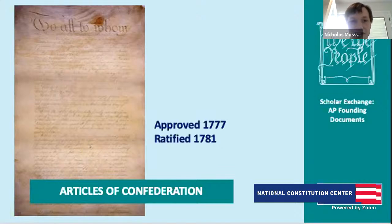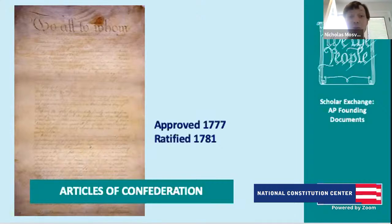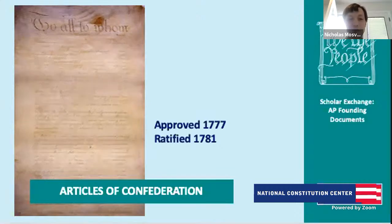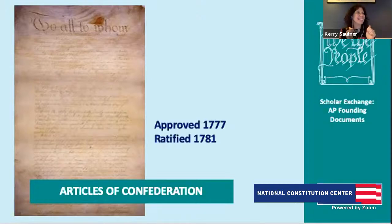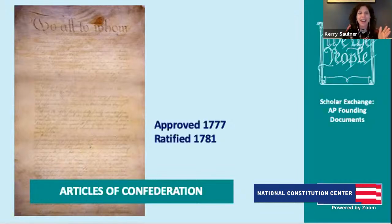All of that points us to the Constitution. The other big point is that the Articles were impossible to amend — they required all 13 states. There are instances where an amendment got 12 of 13 and still didn't pass. That directly leads us to the Constitution, where Article 5 is the amendment process — thank you for that great connecting of the dots.